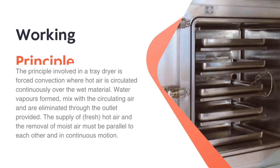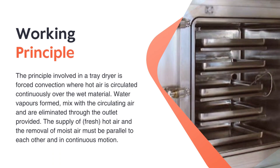The tray dryer works on the principle of forced convection. Hot air is continuously circulated over the wet material that needs to be dried. When hot air passes over the wet surface, water is vaporized and removed from the outlet. The flow of fresh hot air and moist air removal are counter-current in nature.